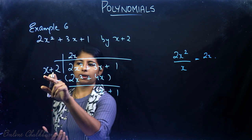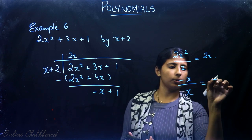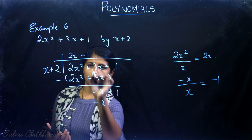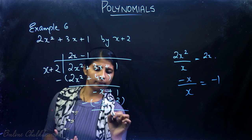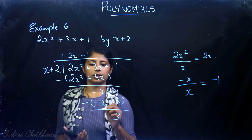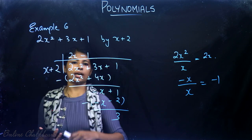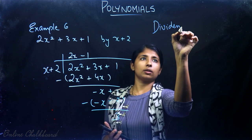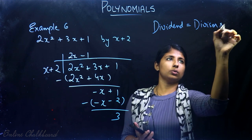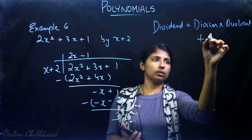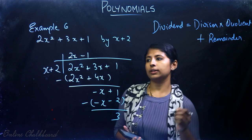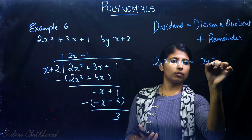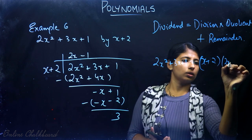−x divided by x equals −1. Then −1 multiplied by (x + 2) gives −x − 2. Subtracting: 1 minus (−2) is 3. So remainder is 3 and quotient is 2x − 1. Verifying the division algorithm: dividend = divisor × quotient + remainder, so 2x² + 3x + 1 = (x + 2)(2x − 1) + 3. This confirms P(x) = G(x)·Q(x) + R(x).